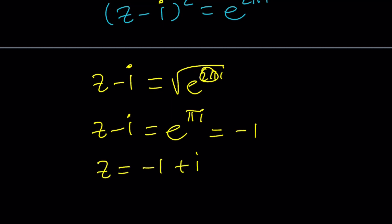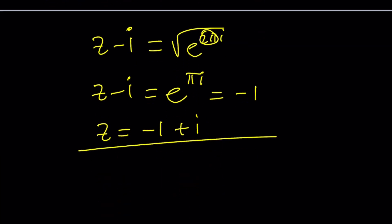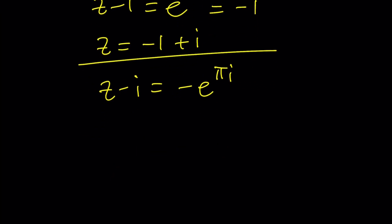So here's one thing to remember. If e^(πi) is a square root of this number, its opposite is also a square root. So we can also write z - i = -e^(πi). You could also put a ± sign here, by the way, to get the same effect.